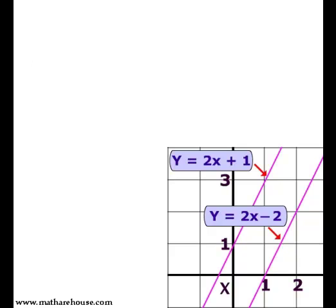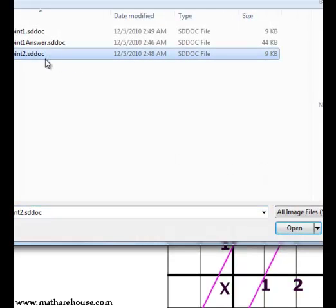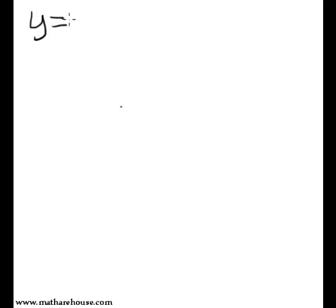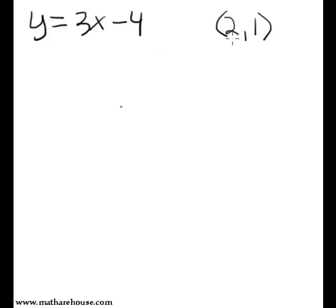Let's now try one more problem. Let's find the equation of a line that is going to be parallel to y equals 3x minus 4, and let's say our new line will pass through the point (2, 1). So we want to find a line parallel to y equals 3x minus 4 passing through (2, 1).